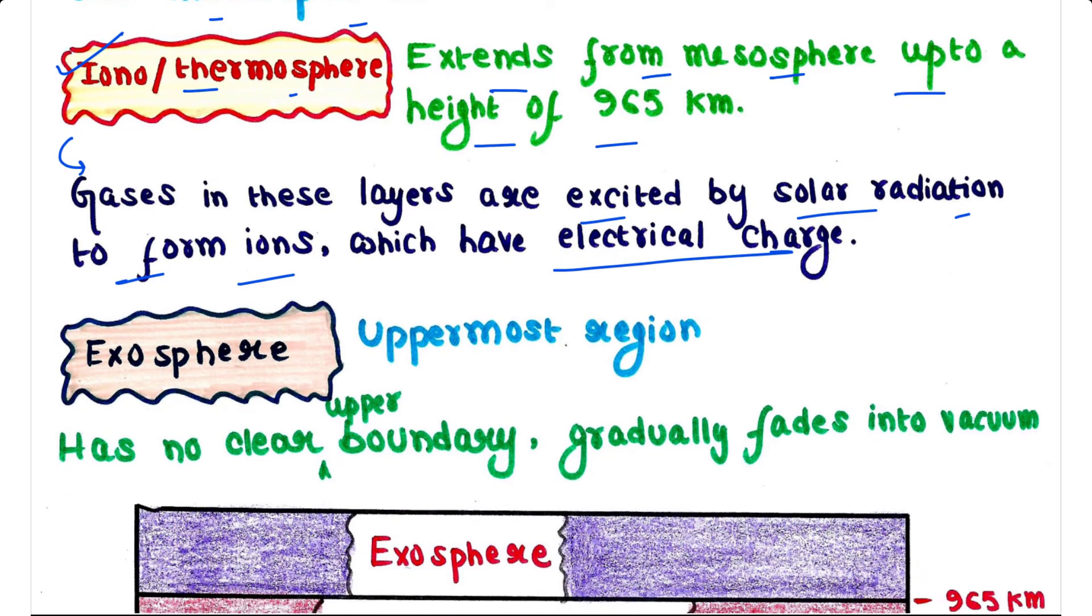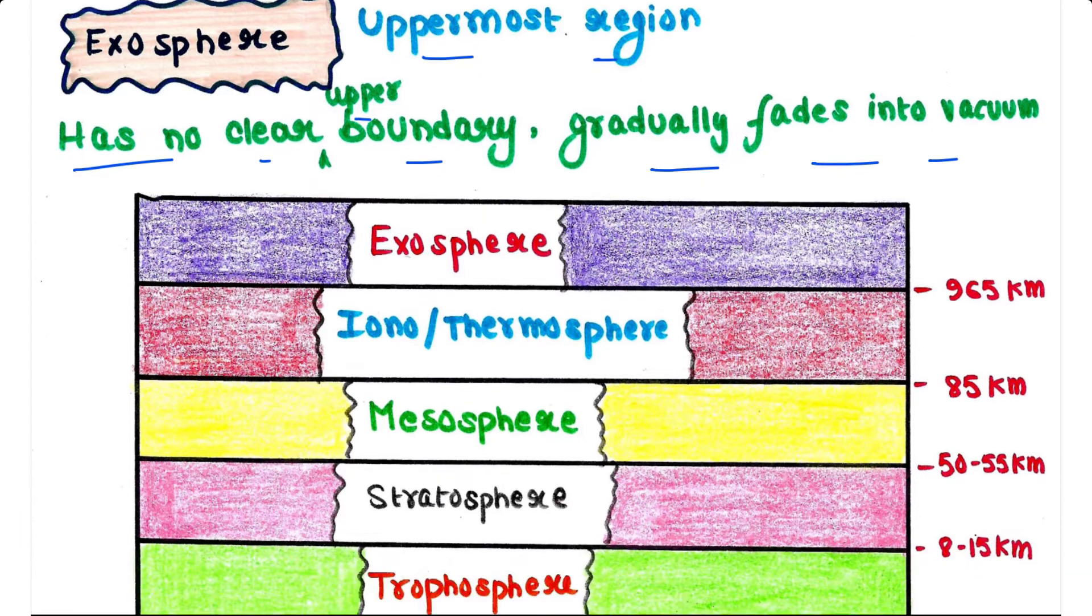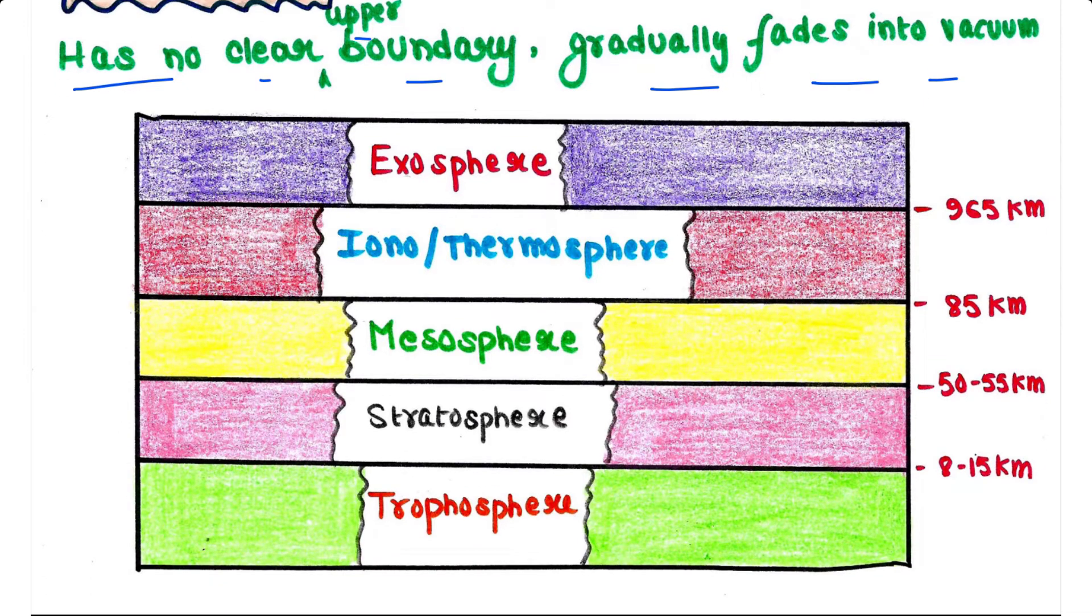Next is exosphere. Exosphere is the uppermost region of the earth's atmosphere. This layer has no clear upper boundary since it gradually fades into vacuum. So although the atmosphere is about 1000 kilometers in width, biosphere includes only the troposphere region, that is 8 to 15 kilometers, because this region is only hospitable to life.